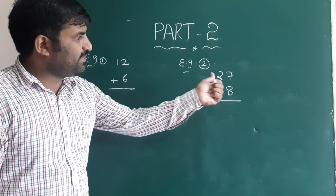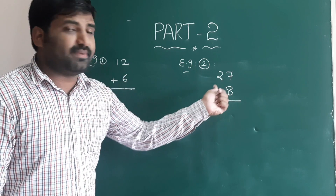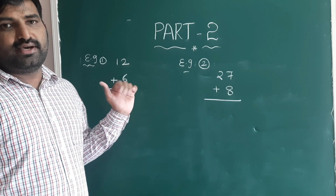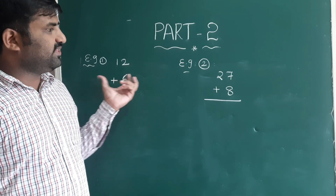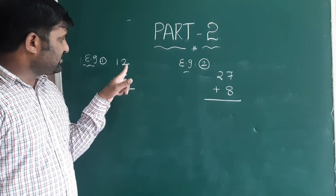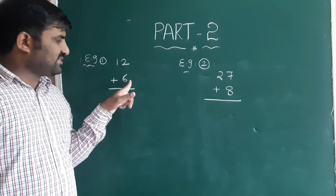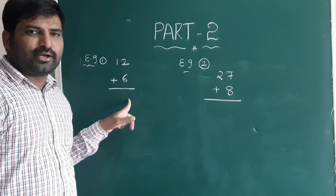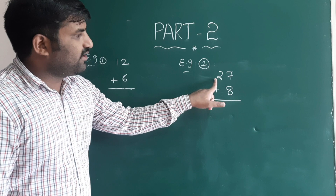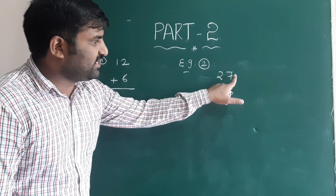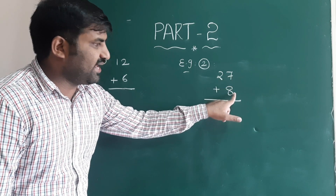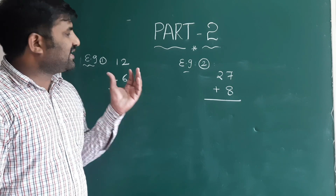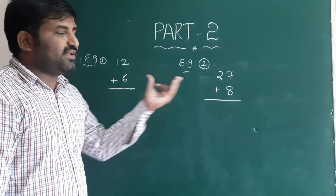I have two examples here: Example 1 is 12 plus 6, and Example 2 is 27 plus 8. See the difference between these two. In the first one, 2 plus 6 equals 8 — that is a non-carrying number. In 27 plus 8, the units digit gives 7 plus 8 equals 15 — that is a carrying number.